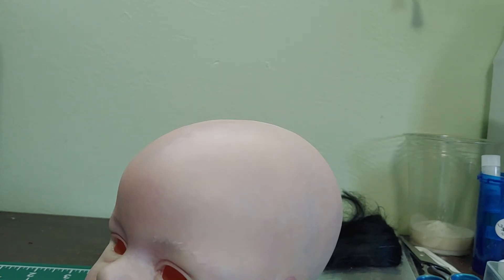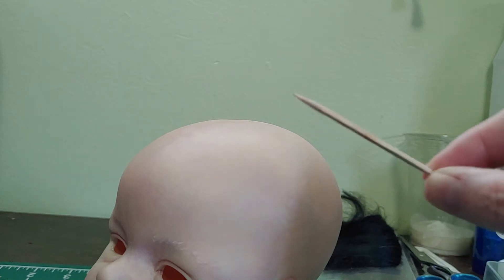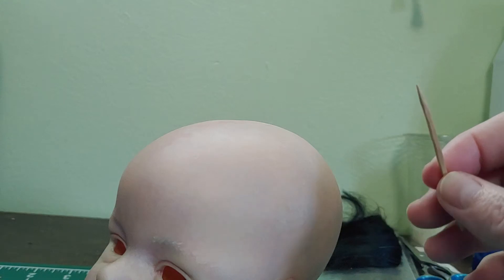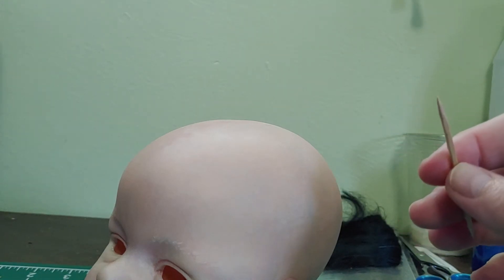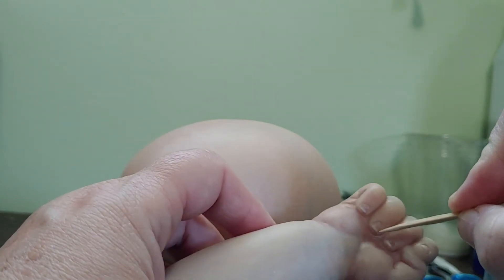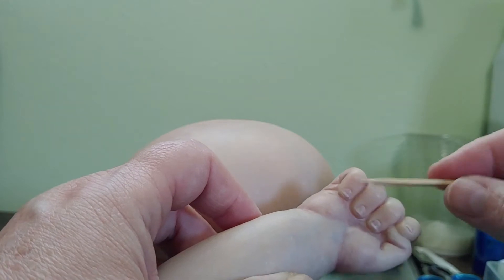So first of all, I want to start with my absolute favorite tool for reborn dolls, and it is a toothpick. Toothpicks are awesome. So if you have some paint that's accidentally ended up in some crevices, you can use that toothpick to kind of lightly scrub it out.